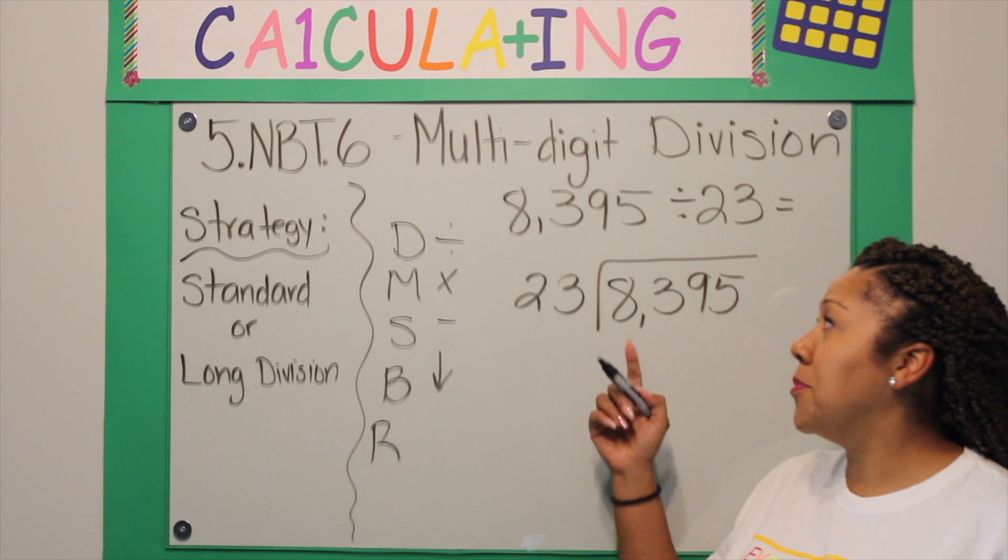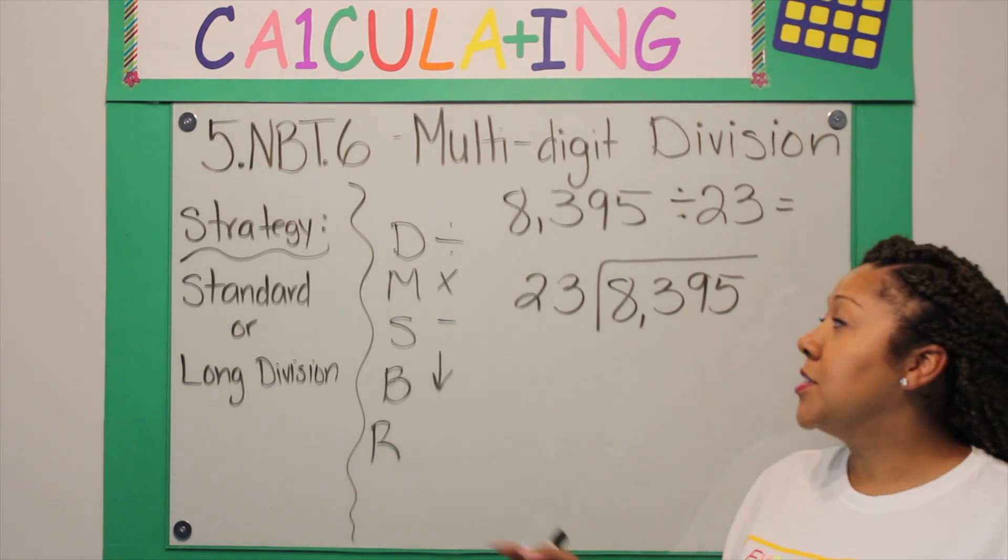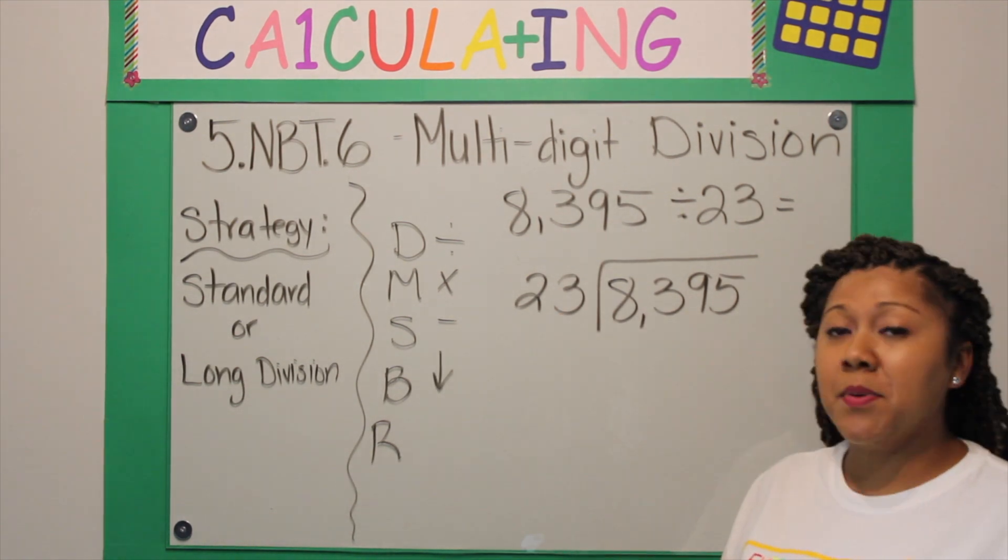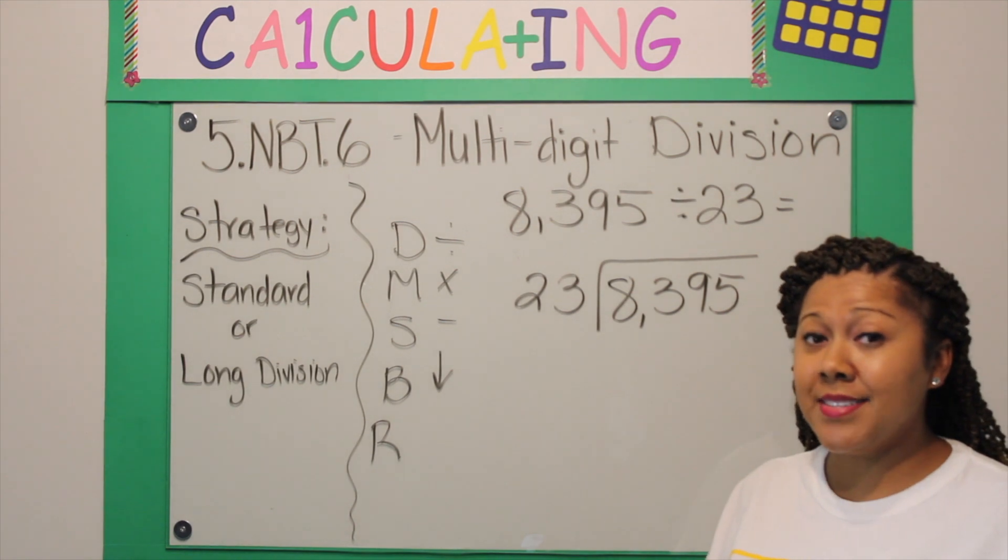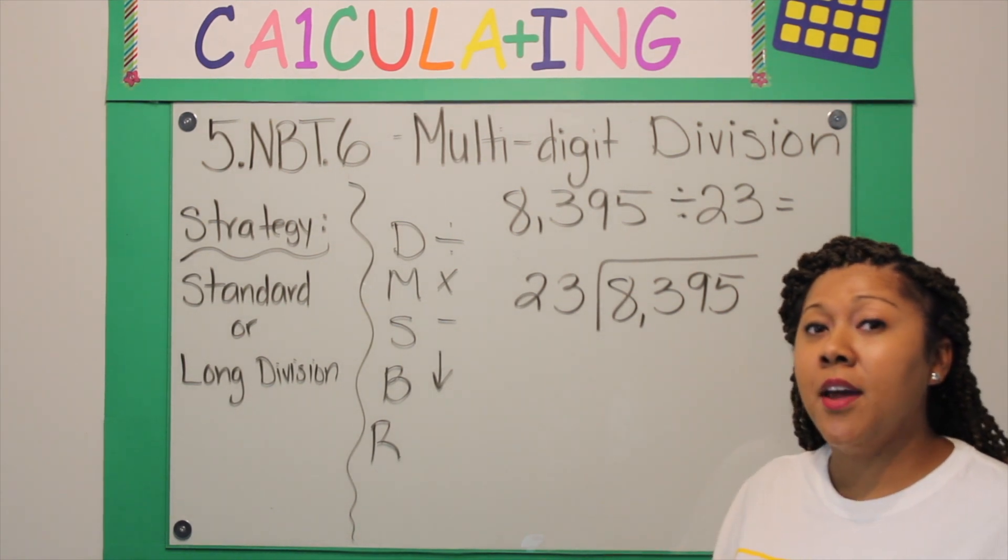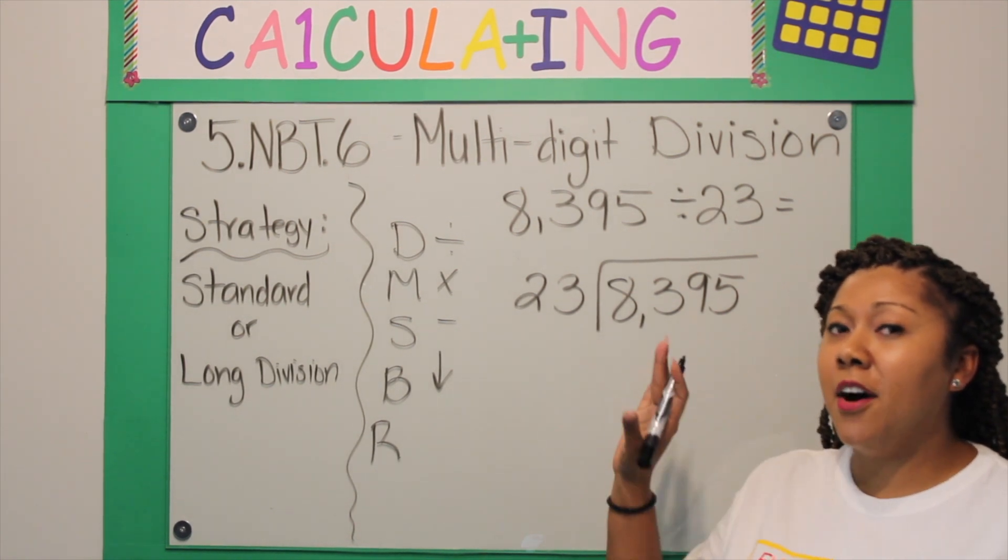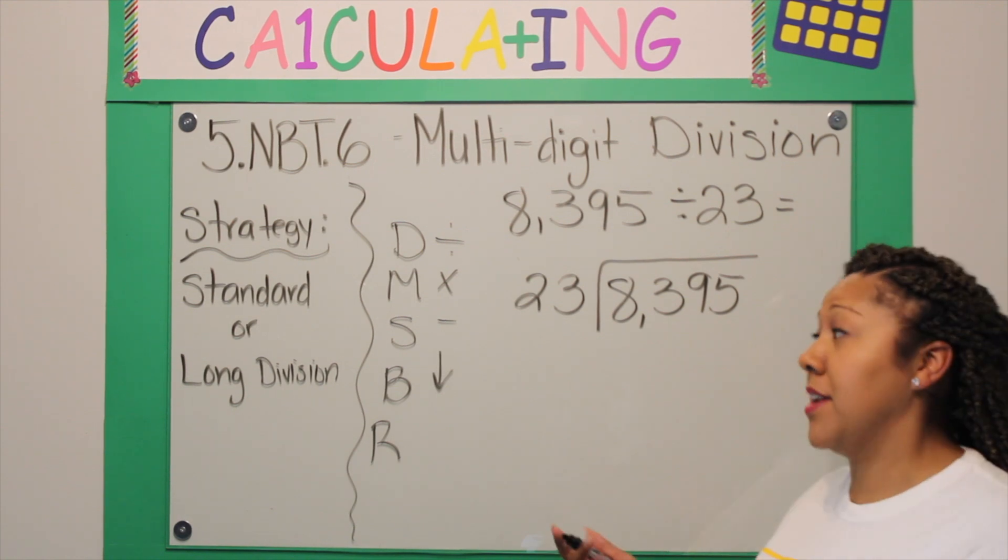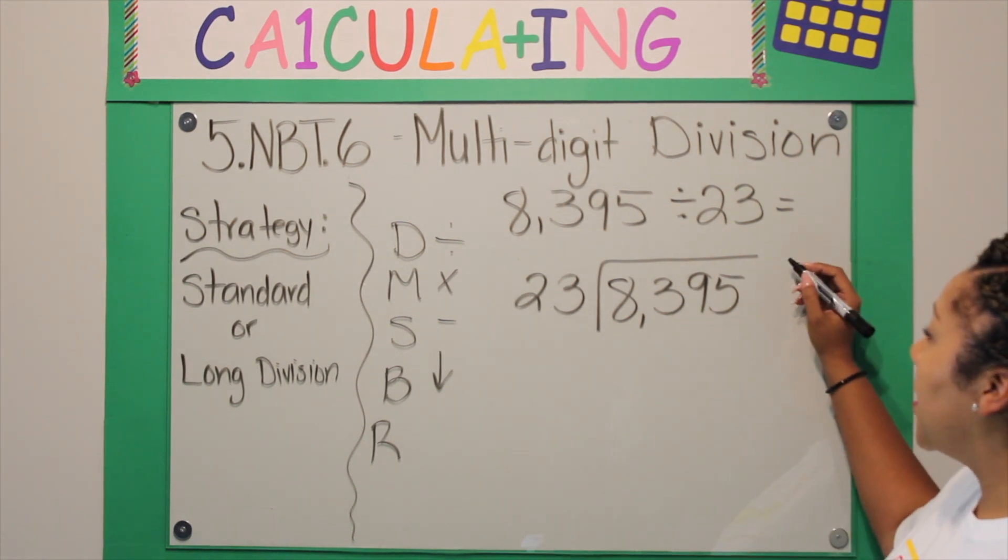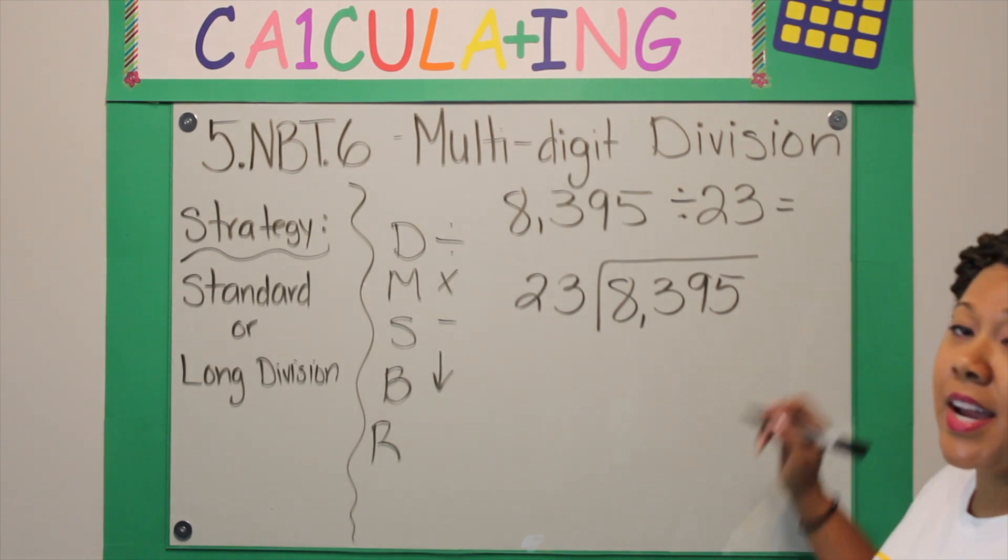We're going to write down our multiplication facts for 23 because it's going to help us number one organize our work, and all of our facts are already going to be there so we don't have to try to figure them out at once.